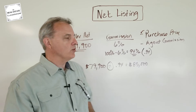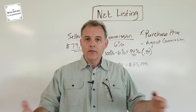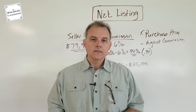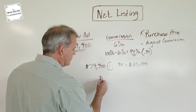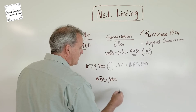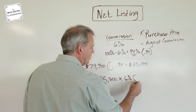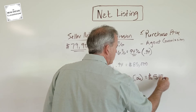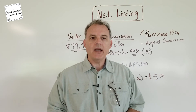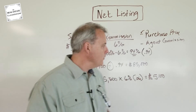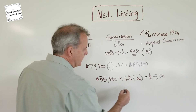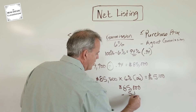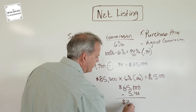We've established the purchase price. Now let's figure out what the agent commission is gonna be. We take the $85,000 and multiply it by 6%, or decimal 0.06, and that gives us $5,100 as the agent commission, which represents the 6%. We can do a quick check: take $85,000 minus $5,100, and that gives us $79,900 — which is the seller net.